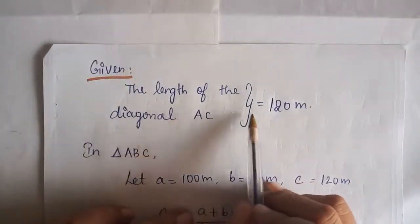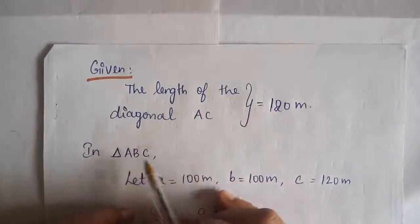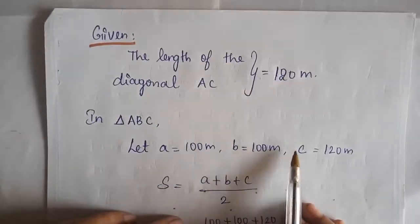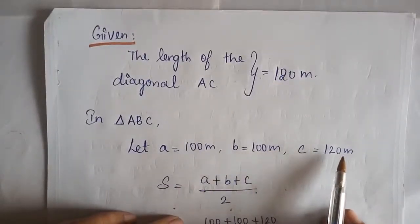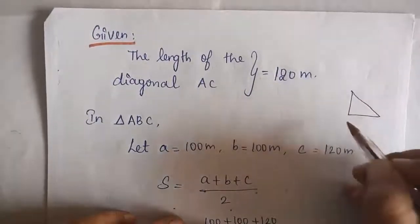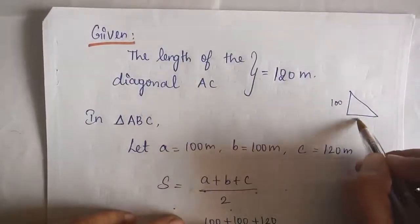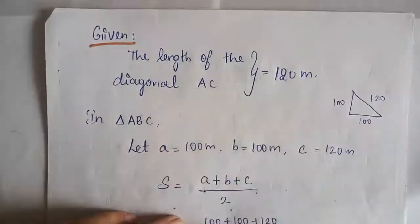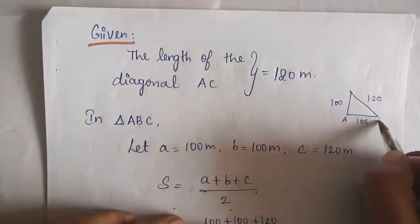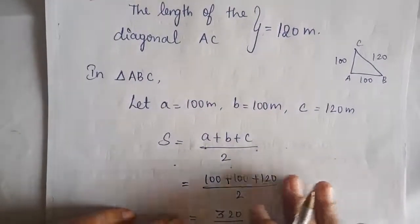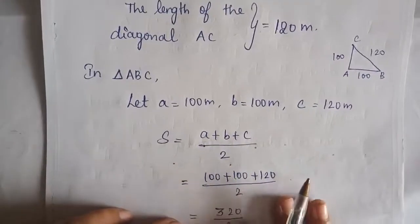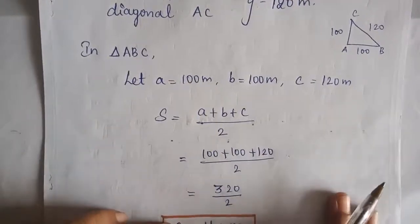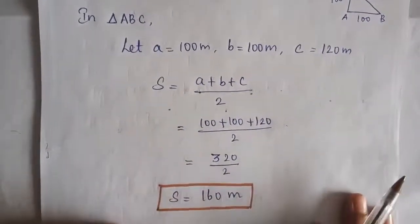The diagonal AC = 120 m is given. In triangle ABC: A = 100 m, B = 100 m, C = 120 m. Semi-perimeter S = (100 + 100 + 120)/2 = 320/2 = 160 metres.